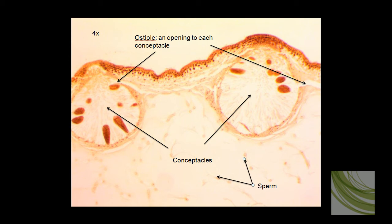Within these concepticles, we can see the female archegonium filled with eggs, and we can see in this slide very well some sperm, and they are scattered throughout this area.